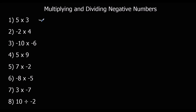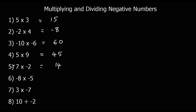5 times 3 — positive times a positive — so positive answer: 15. Negative 2 times 4 is 8 — it's a negative times a positive, so it's a negative answer. Negative 10 times negative 6 is 60 — it's a negative times a negative, so the answer is positive. 5 times 9 is 45 — positive times a positive, positive answer. 7 times negative 2 is 14 — positive times a negative is a negative. Negative 8 times negative 5 is 40 — a negative times a negative is a positive.